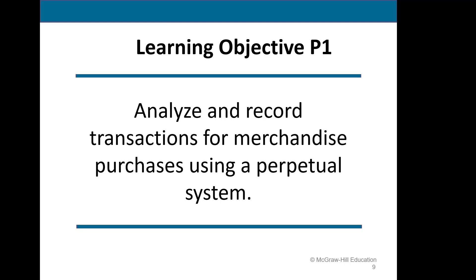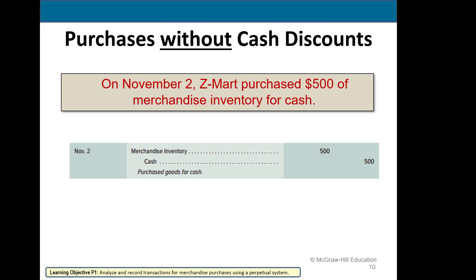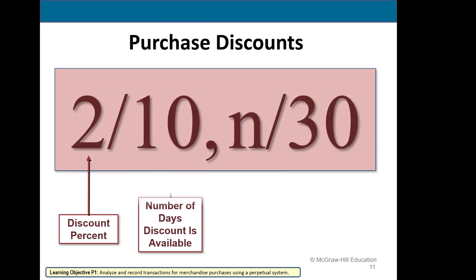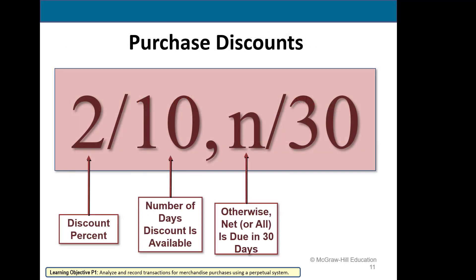Now we'll look at purchase transactions. When we purchase our merchandise, we will debit an account called merchandise inventory and then credit however we pay for it. If we paid cash initially, we will credit cash. We can also purchase merchandise on account, and if we pay early, we will get what's called a purchase discount.